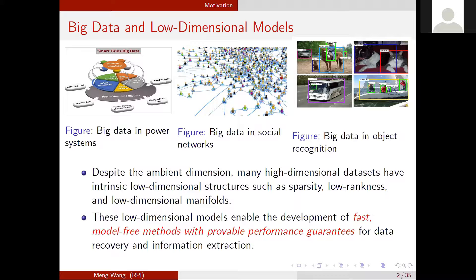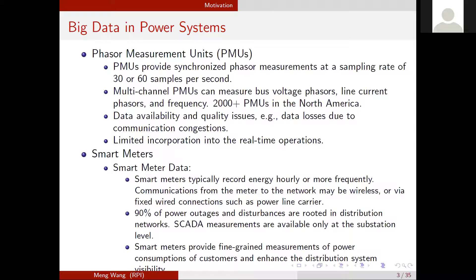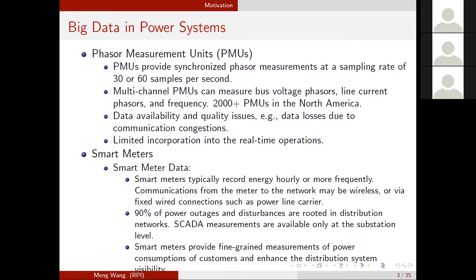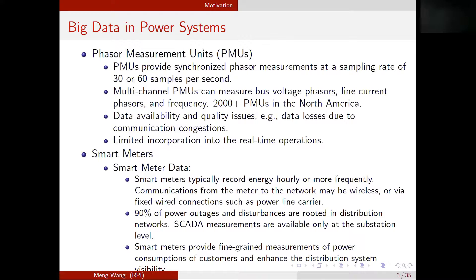We are going to focus mostly on power system applications. The data we will focus on is real-time PMU data. Nowadays, we have more than 2,000 PMUs installed in North America. The sampling rate is about 30 or 60 samples per second, and there are usually multi-channel PMUs that measure voltage phasors, line current phasors, and frequency. There are data quality issues: operators observe data losses and sometimes data errors due to device issues, scaling problems, or communication congestion. Due to these issues, PMU data is not yet incorporated into real-time control operations.